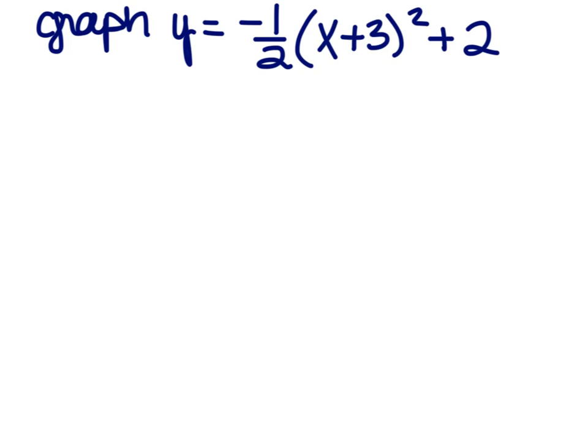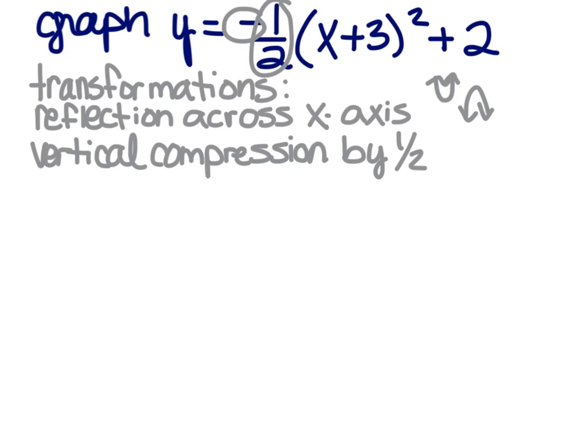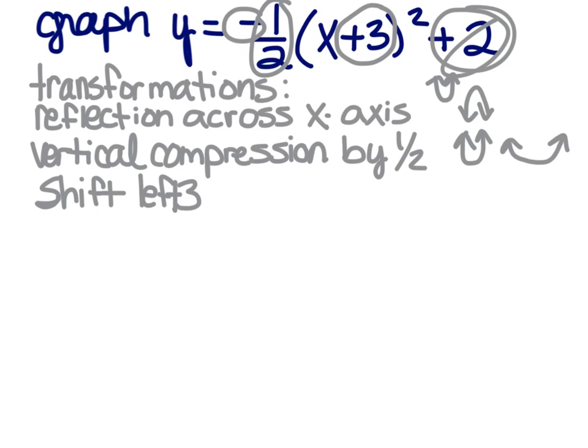So here's an example. Let's graph y equals negative 1 half times x plus 3 squared plus 2. And the first thing I'm going to ask you is what are the transformations? And based on what we just learned, we can know that this negative is a reflection across the x axis, which will take our parabola from happy to sad, right? This 1 half is going to be a vertical compression by a half. Our parabola is, ooh, class is over, is going to get wider, right? Because it compresses vertically. It squishes down and it gets wider. This plus 3 is going to shift us to the left 3, plus 2, sorry about that, will shift us up 2.